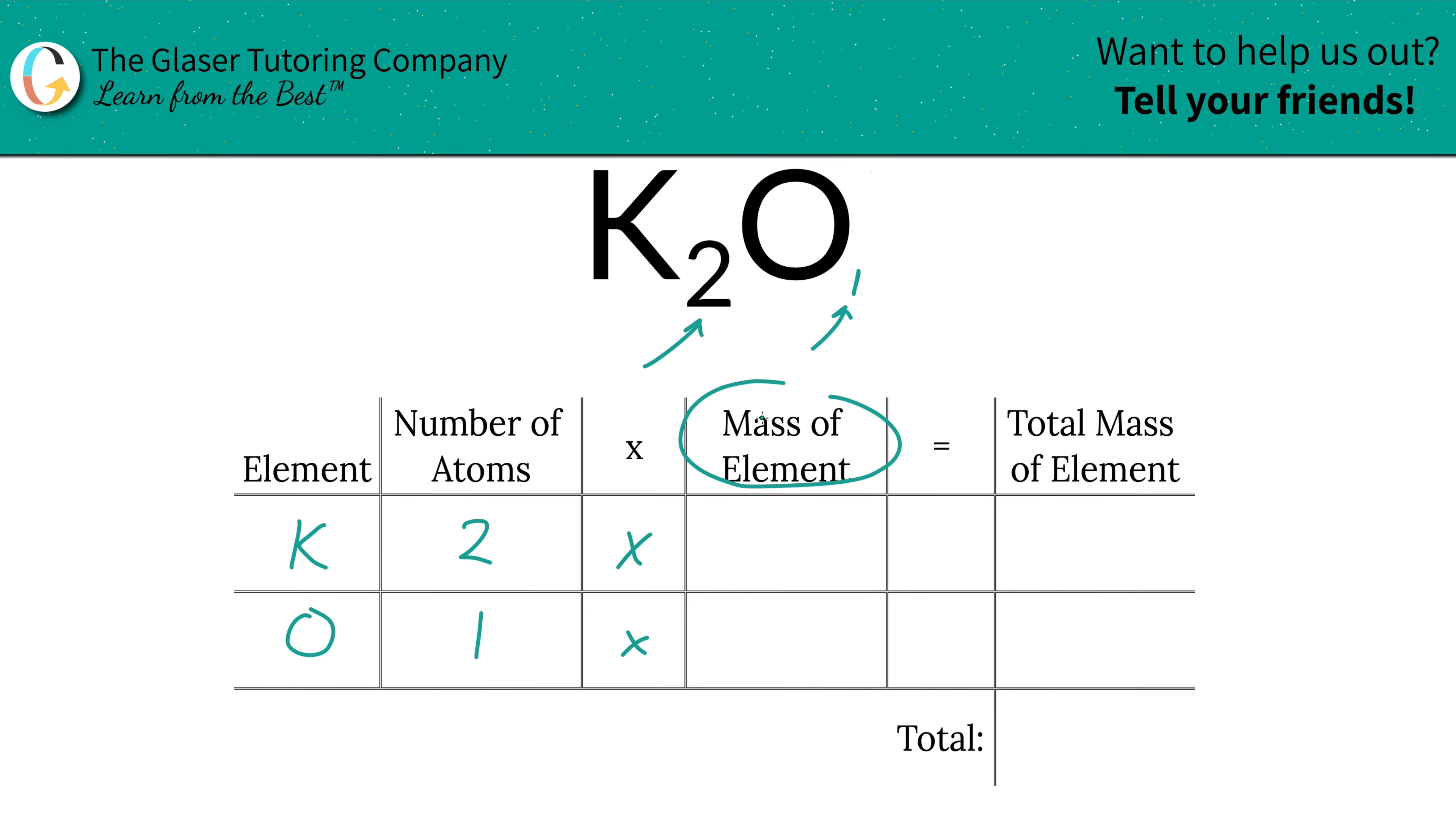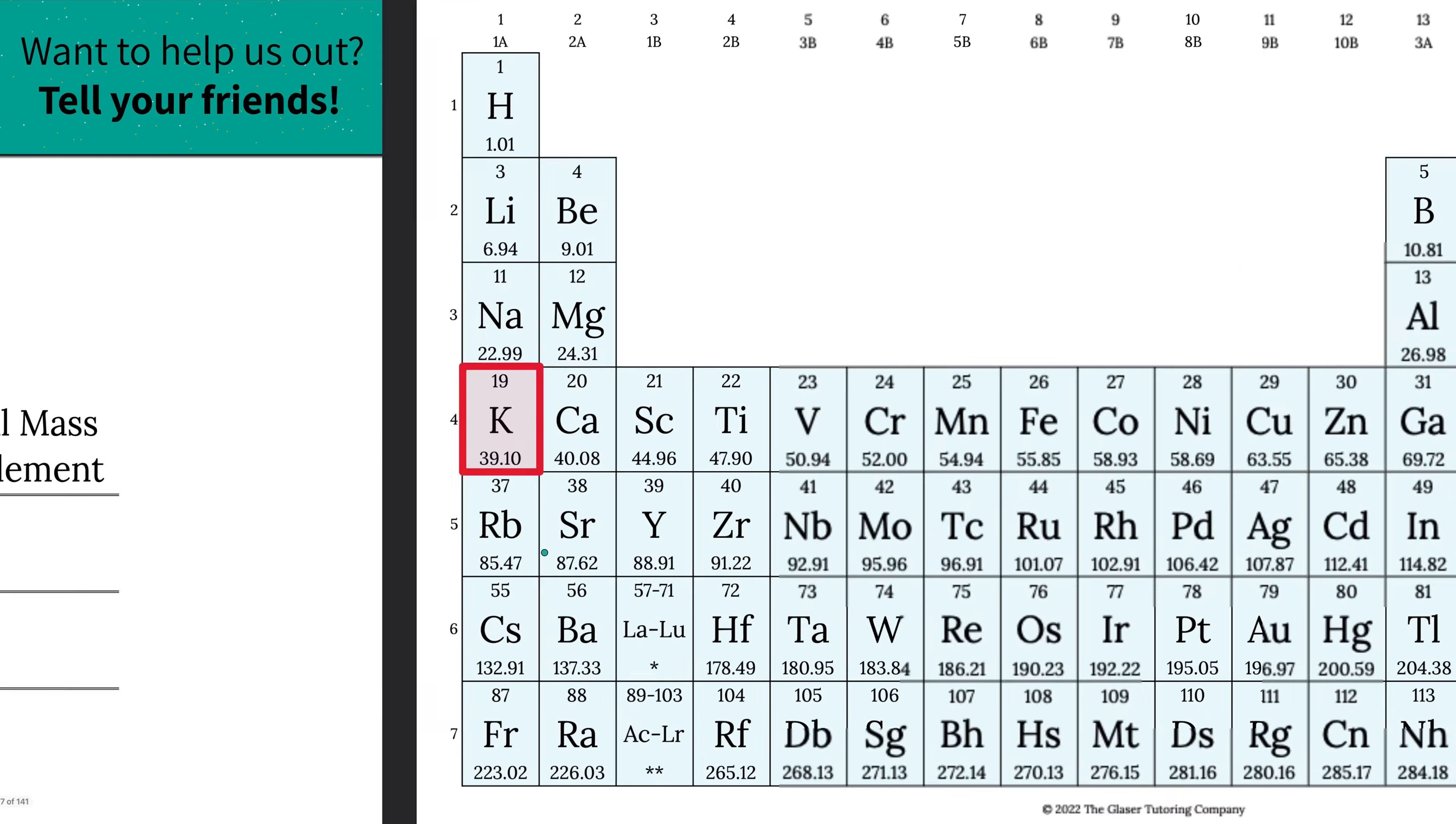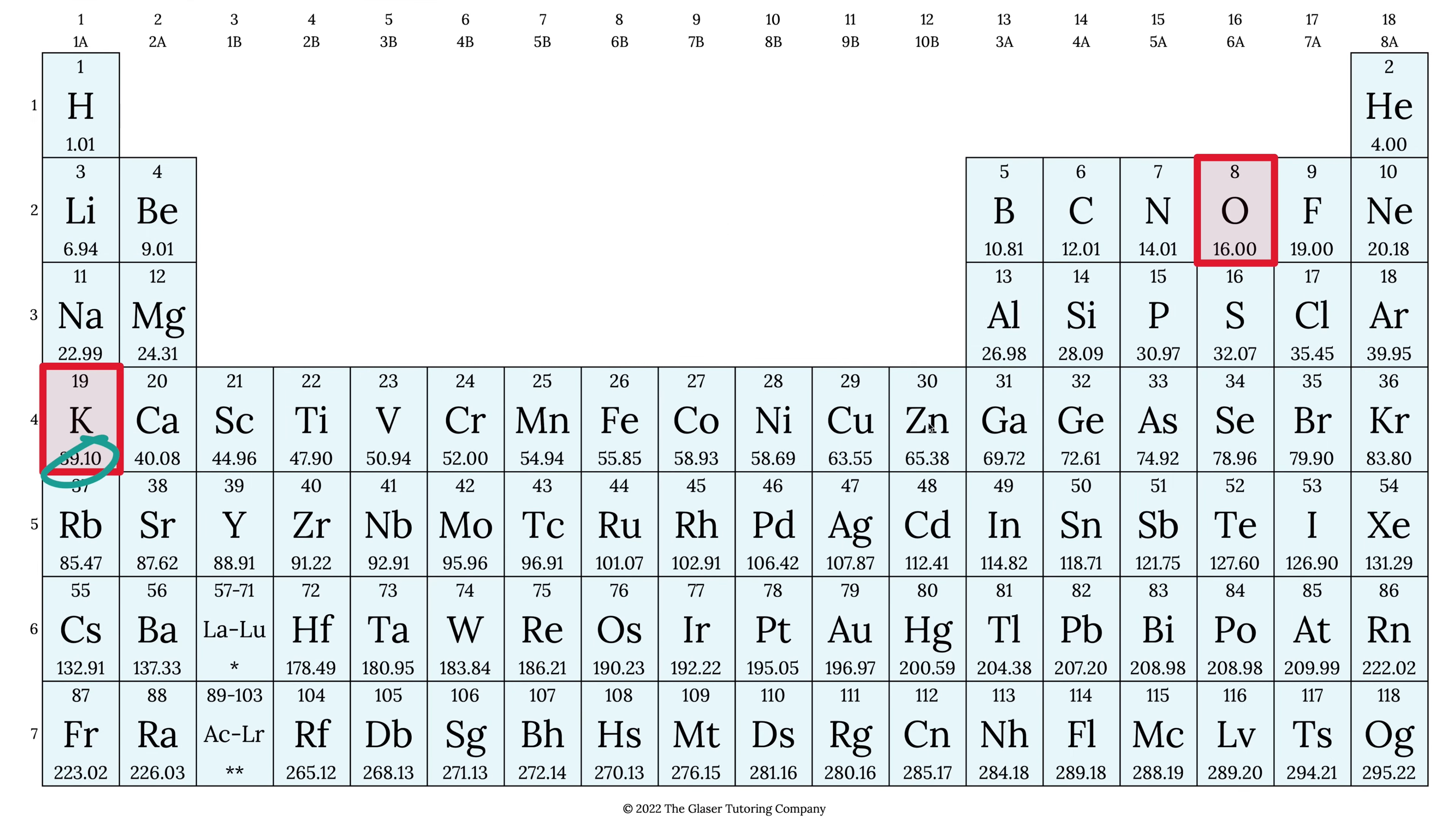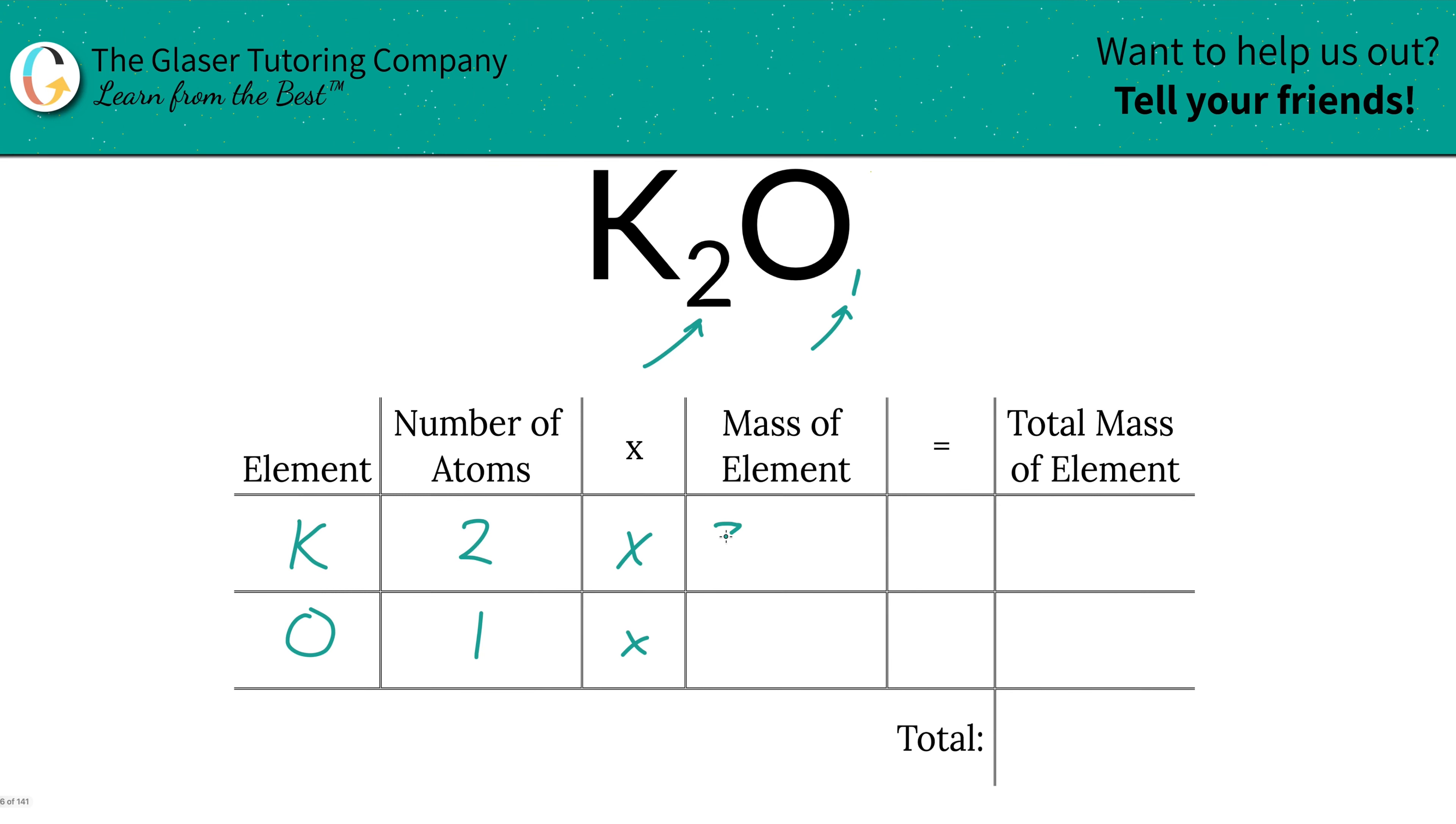Then we're going to take those number of atoms and multiply it by the mass of the element. That's where the periodic table comes into play. So let's take a look. So we have potassium here, 39.10, and we have oxygen over here, 16. So let's write that down. So we've got 39.10, and we have 16 for oxygen.